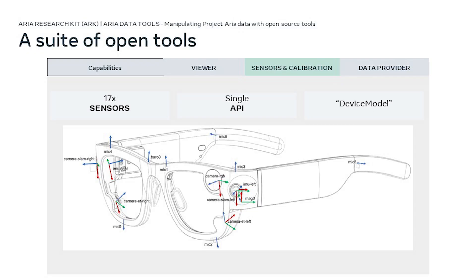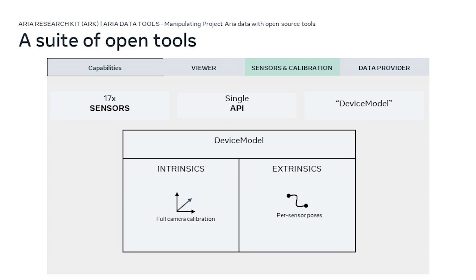Project ARIA comes with a rich sensor suite — 17 sensors. So it's convenient to have a single interface where you can query data and understand where a sensor is and how to use it. To do so, we use a concept called the device model, and using this you can retrieve intrinsic and extrinsic data for every sensor.